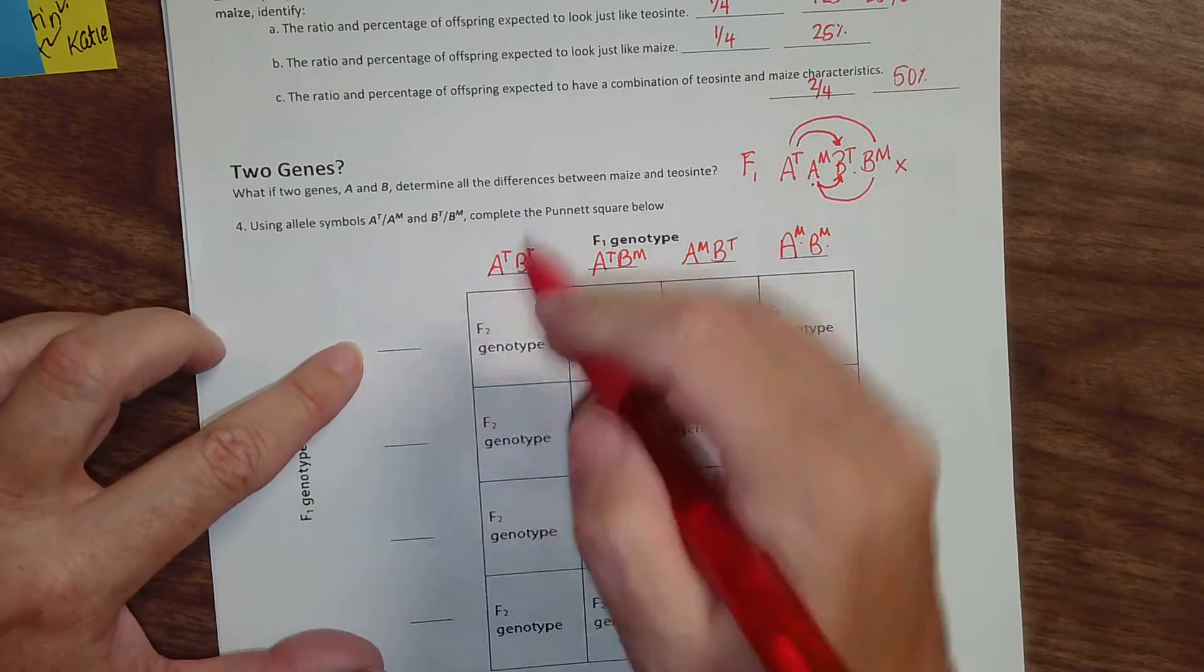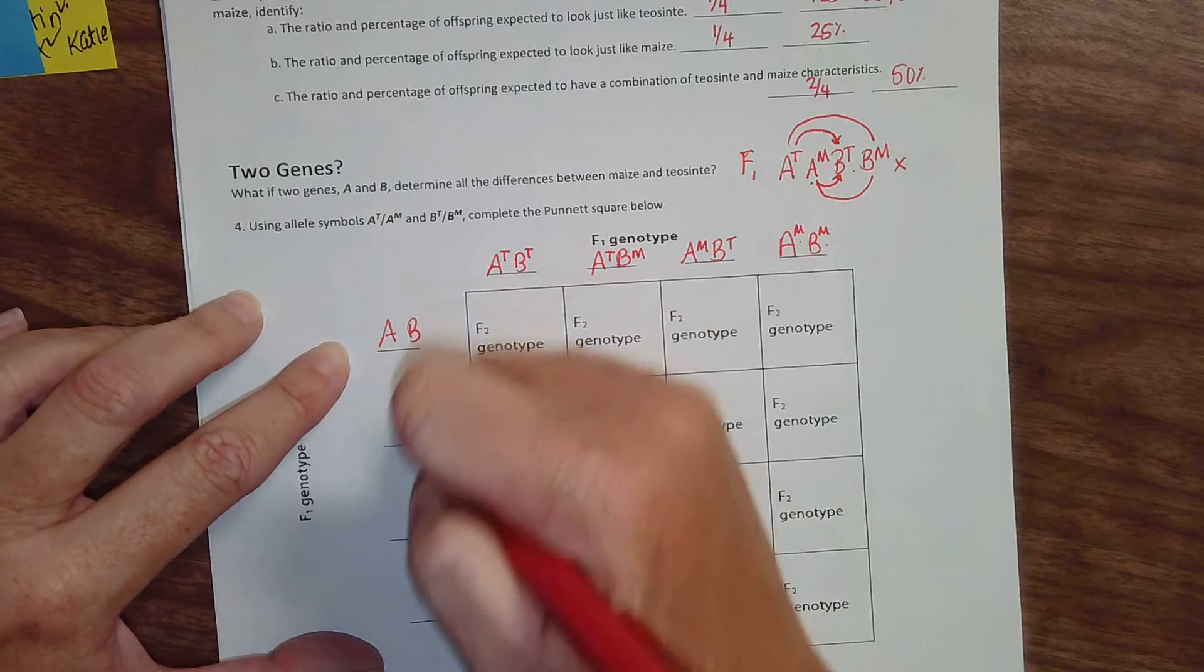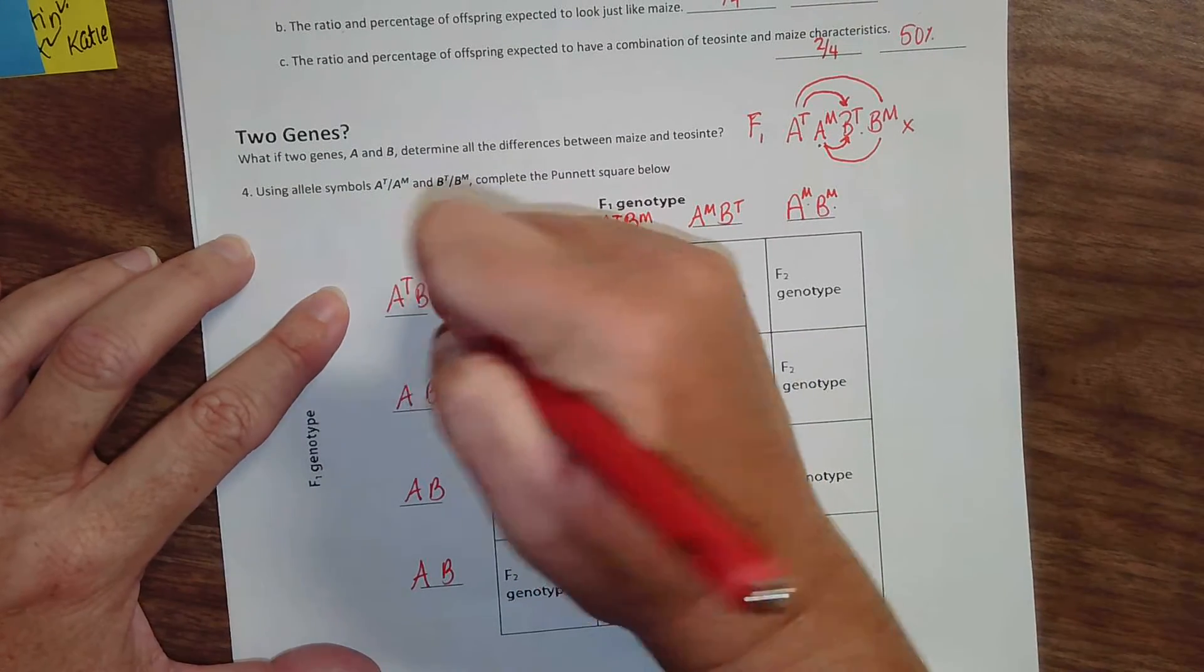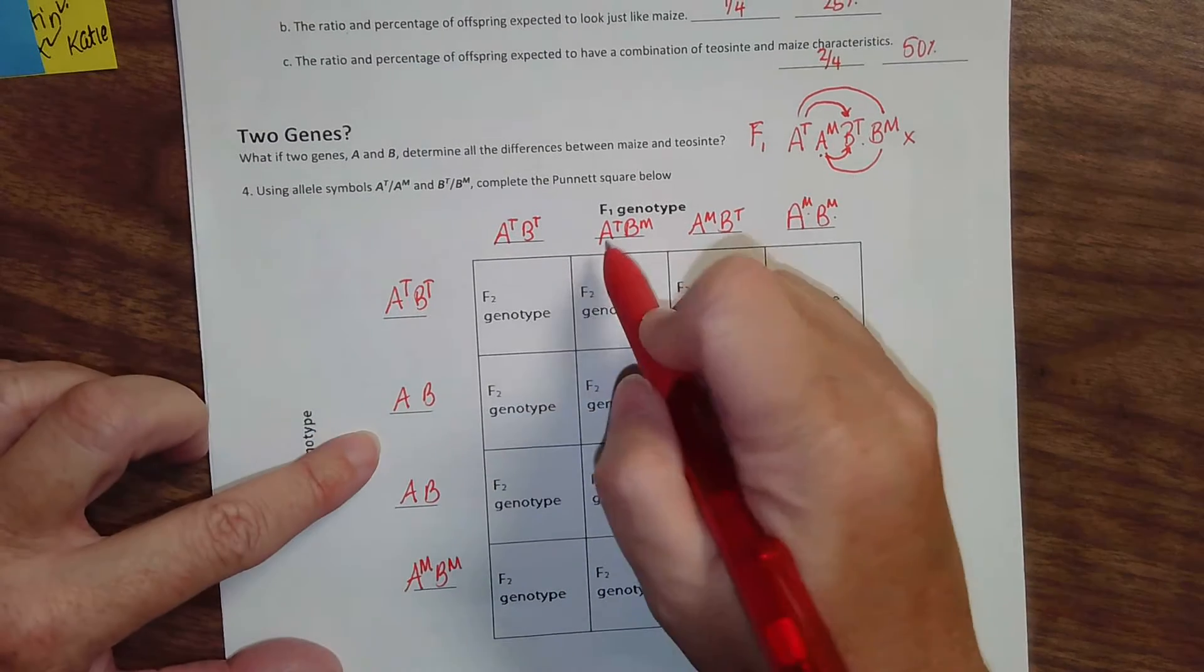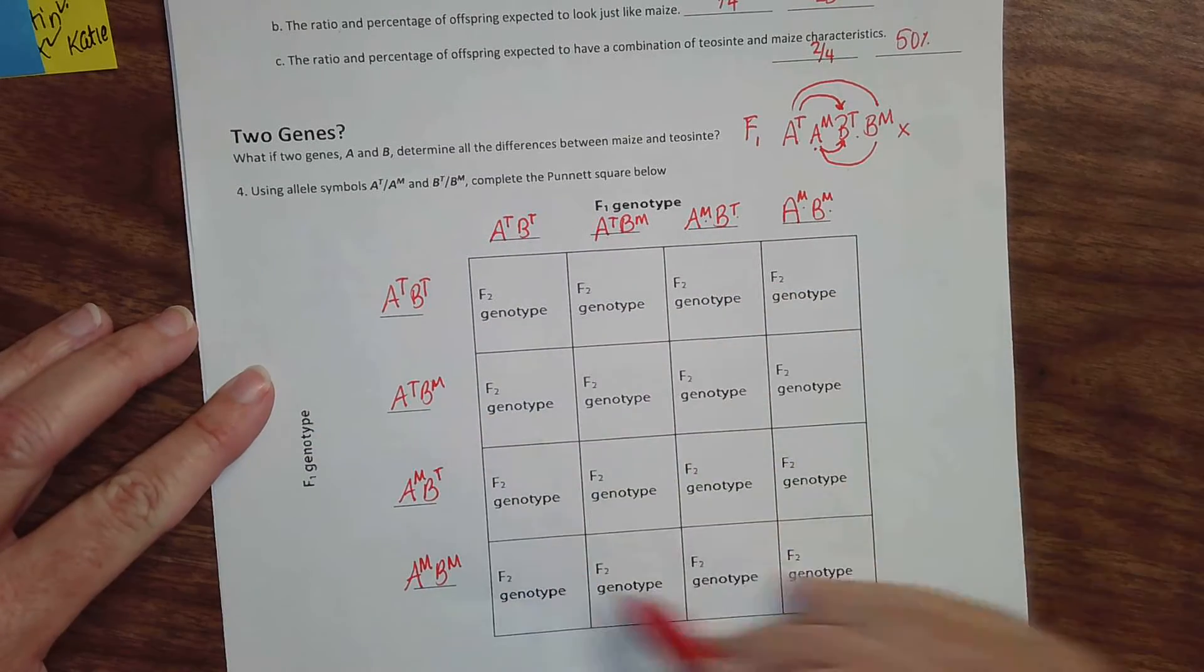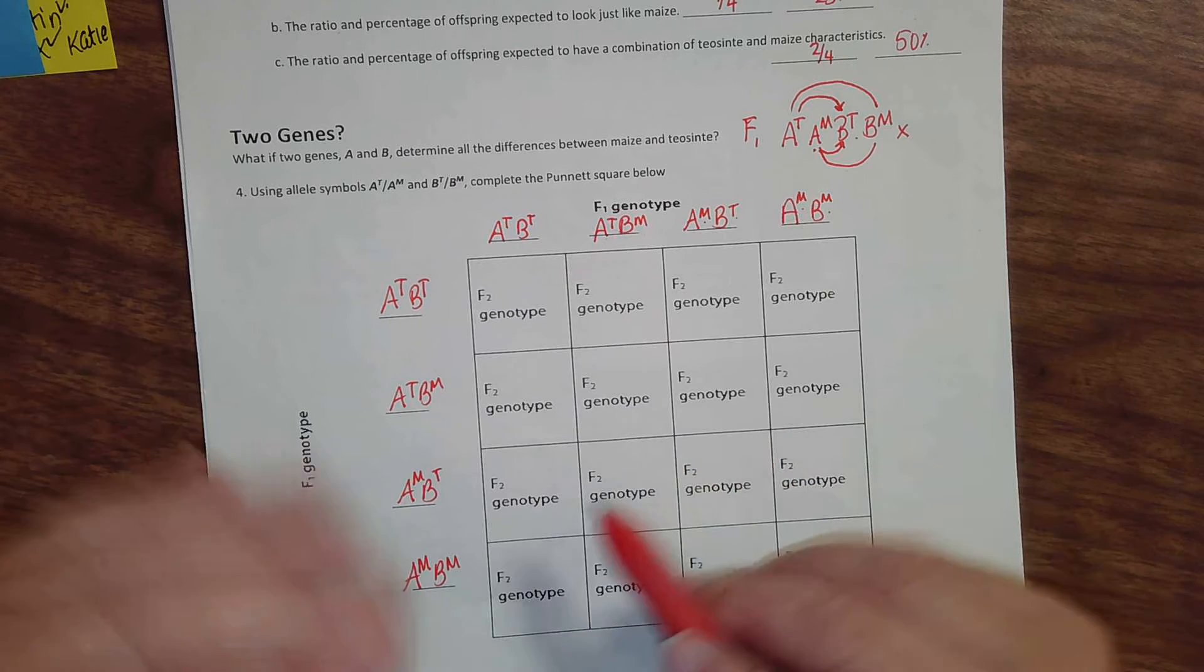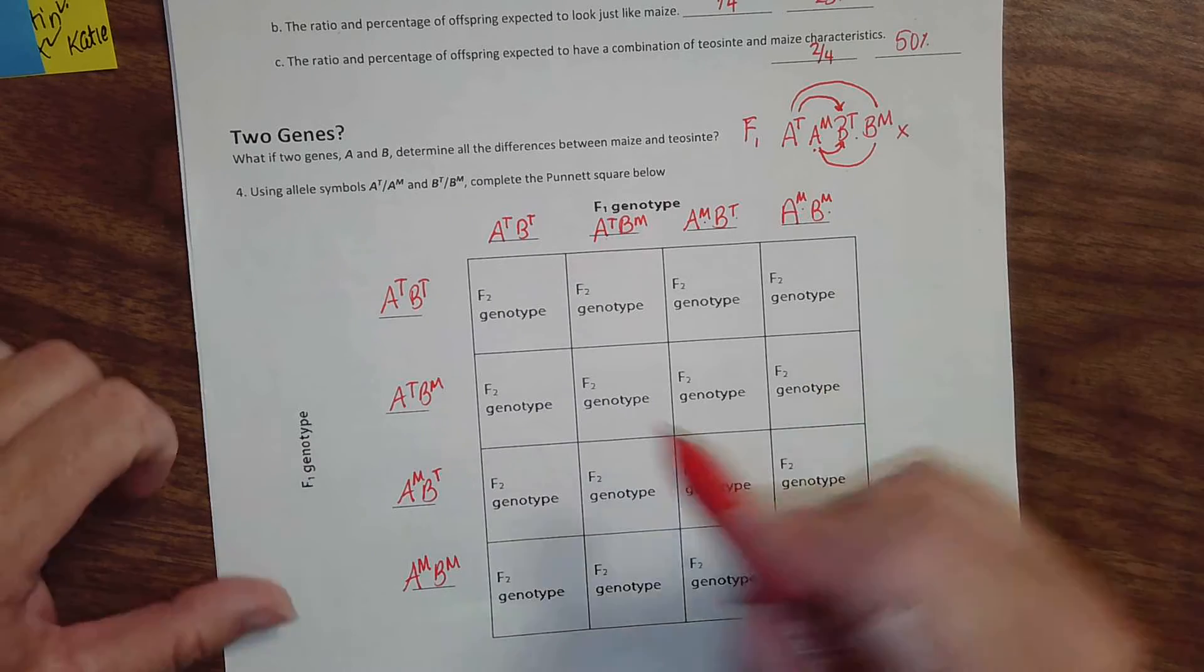And then we're going to cross that with itself, so we're going to do all of these gametes down the side. So we've got an A and a B allele for each gamete possibility. We're going to do both the T's here, both the M's here. If we keep consistent, this will help us in the next Punnett square. And then we've got a T and an M here, an M and a T here. When you fill out this Punnett square, just do the T's and M's, because we know that the only way a plant looks like Teosinte is to have all Teosinte alleles. The only way it looks like maize is to have all maize alleles. So watch how I fill this in.